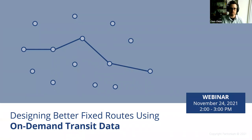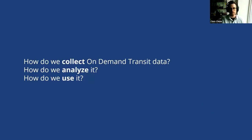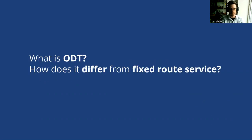Before we get into the meat of things, there are three questions we're going to be talking about: how do we collect on-demand transit data? How do we analyze it? And how do we use it to build better fixed routes? But first, a preemptory question — what is ODT, what is on-demand transit, and how does it differ from fixed route service? This will be pretty familiar to anyone who's been to one of these webinars before or is familiar with our company, but I'll go through it quickly.